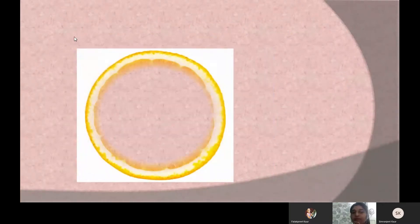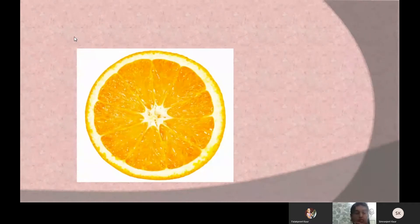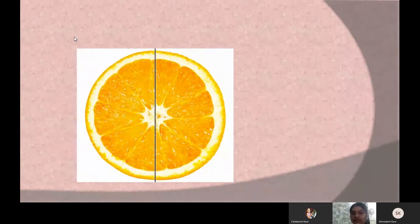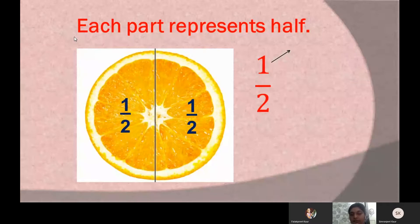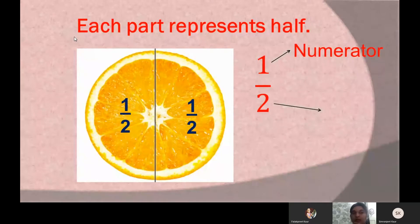Now if I divide this slice into two equal parts, then I get two parts of this slice. Each part represents 1 by 2, and this 1 by 2 represents the fraction half. Now here in the fraction 1 by 2, the 1 which is written on the top is called the numerator, and the 2 which is written on the bottom is called the denominator.